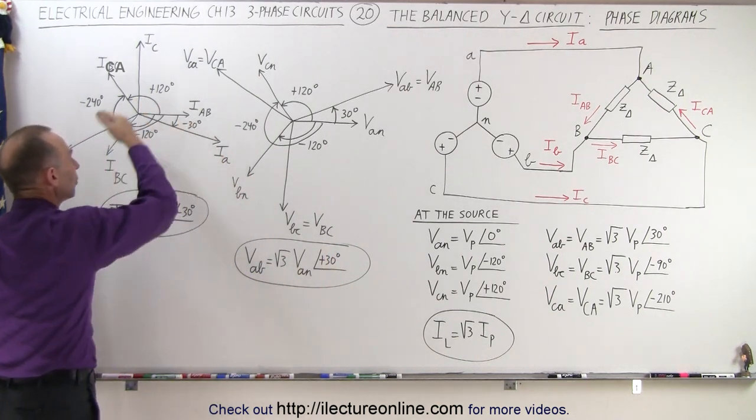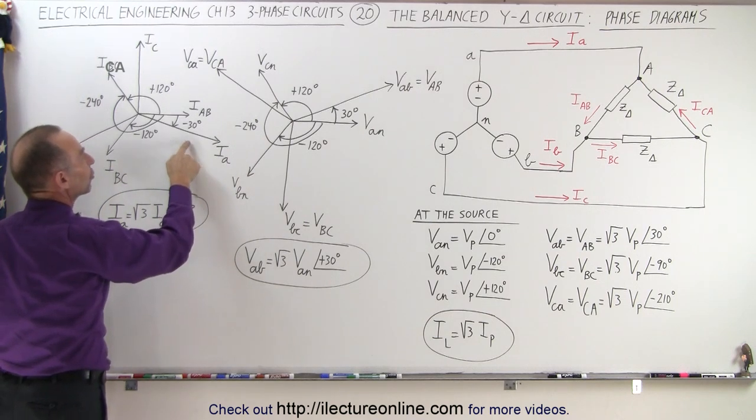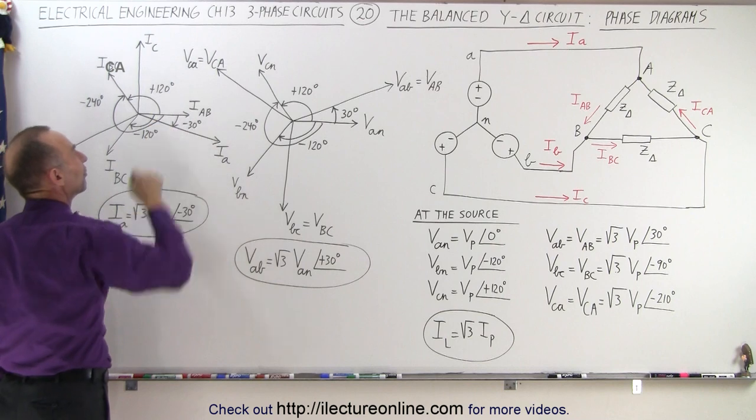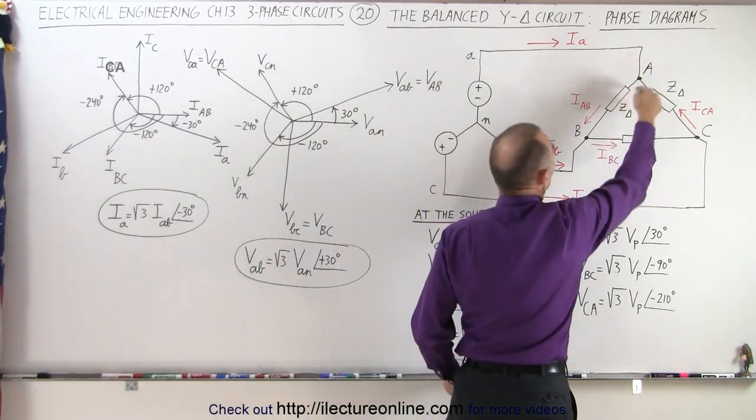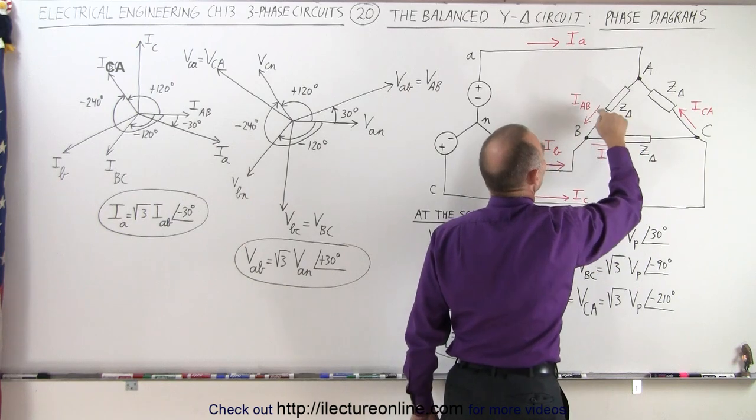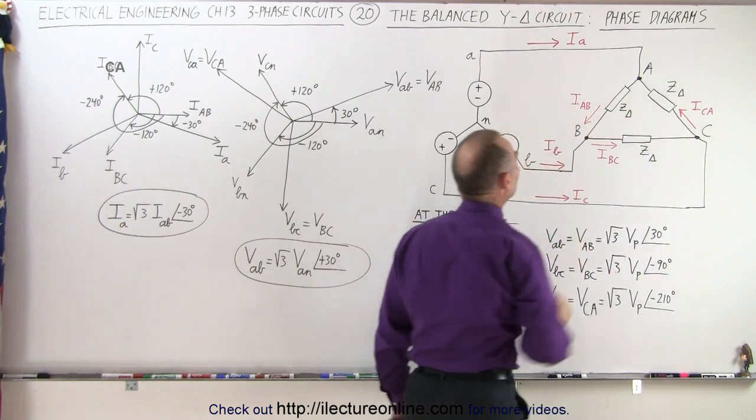If we then look at the currents, it's a slightly different story. The magnitude of the line current is indeed the square root of three times the magnitude of the phase current. Notice that the phase currents are defined by the currents through the load impedances: IAB, IBC, and ICA. Those are what we call the phase currents.